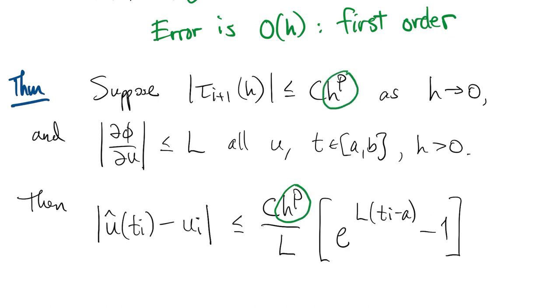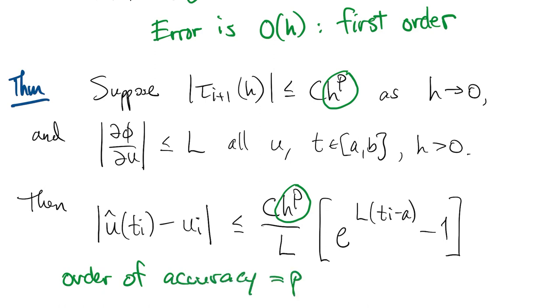The real point of this theorem is that the order of accuracy in the numerical solution is the same as the order of accuracy in tau.